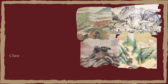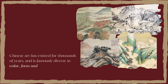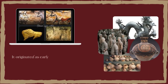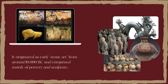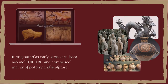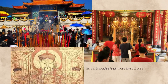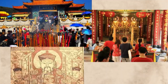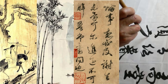The evolution of Chinese art: Chinese art has existed for thousands of years and is famously diverse in color, form, and style. It originated as early stone art from around 10,000 BC and is comprised mainly of pottery and sculpture. Its early beginnings were based on the religious and supernatural beliefs of Chinese settlers. Their painting, quite abstract in form, involved the same techniques as Chinese calligraphy — a thin brush dipped into color ink with minimalist brush strokes used to represent both people and landscapes.